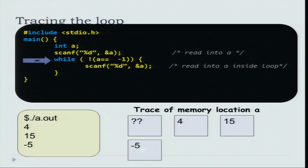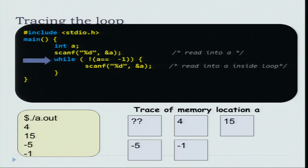You enter minus 5. Minus 5 is not minus 1, so you enter the loop again. At this point, you scan the number into a and a becomes minus 1. You go back to the loop condition and now a equals minus 1, so not of that is false — the while condition becomes false. At this point, you exit the program. This is a very simple part of the program we want to write. Recall that we want to read a bunch of numbers and sum them, with the end of input represented by a minus 1. Until now, we have just read those numbers.